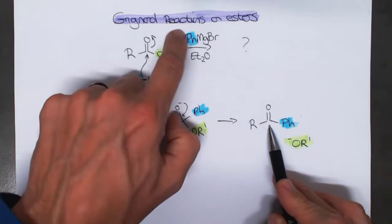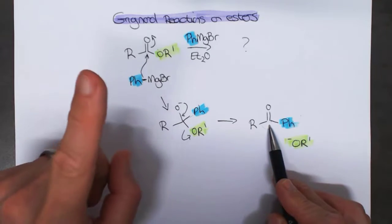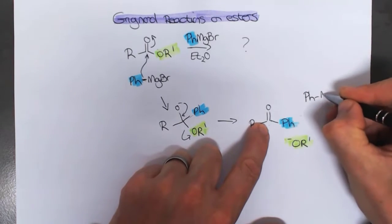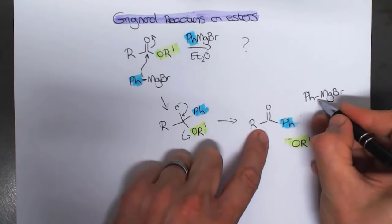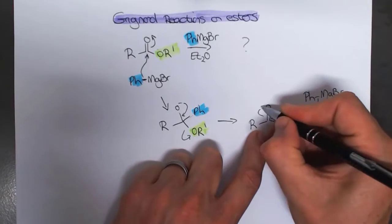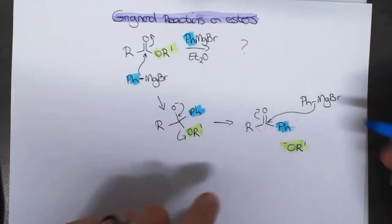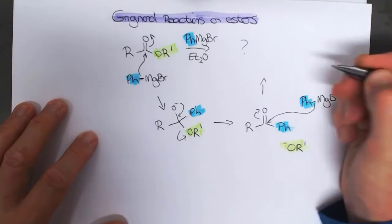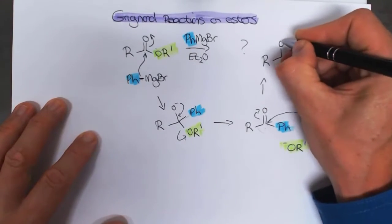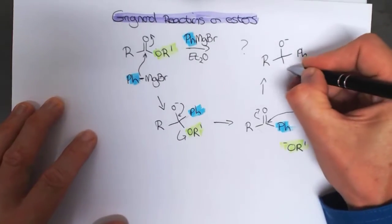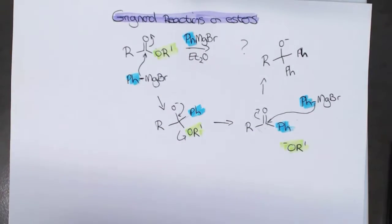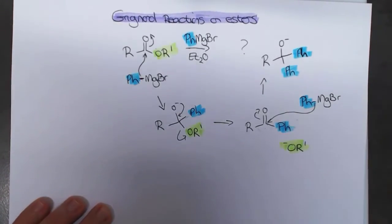So even if you tried to add just one equivalent of Grignard reagent, the ketone product is more reactive, and a second molecule of the Grignard reagent is going to come in and add a second time to the newly formed ketone. The product is initially the alkoxide, but once we protonate that during workup, we get what will be a tertiary alcohol as the final product.